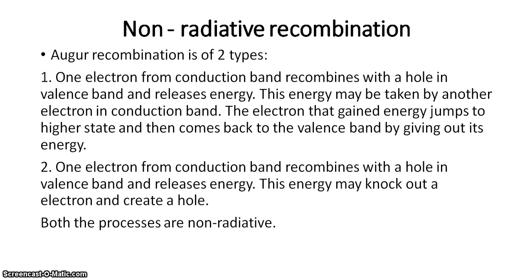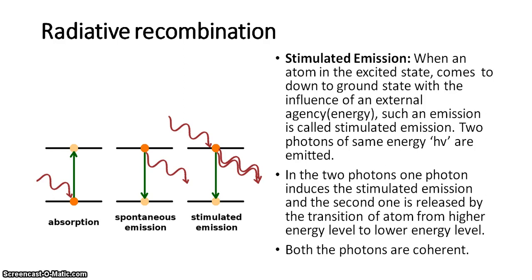Why is spontaneous emission incoherent? The reason is that particles from different higher energy levels come down to the ground level; in doing so they give out different values of energy, which means different values of frequencies and wavelengths — a broad spectrum is given out. In stimulated emission, transitions occur only between any two specific energy states, so the energy values given out are the same, leading to the same frequency and wavelength.